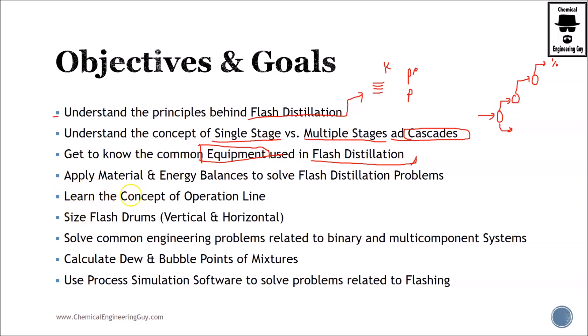One of the most important parts will be use material and energy balances to solve flash distillation problems. So material balances are typically accompanied by K values or by equilibrium theory, and the energy balances is adding the heat duties, temperature changes, enthalpies, and so on. So this is also what we saw in the course. The concept of operation line, which in my opinion is one of the most important ones in this course. If you understand it here, you will understand it in other courses which are related to mass transfer.